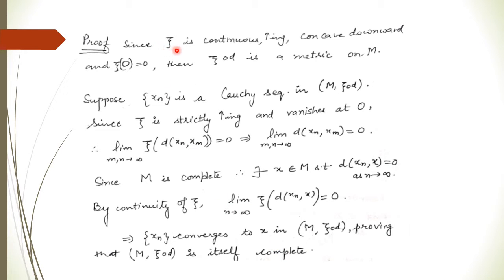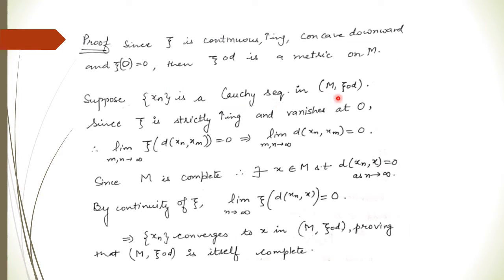Since ξ is continuous, increasing, concave downward, and vanishes at 0, the composition ξ∘d is a metric on m. We can easily verify that it satisfies all the conditions of a metric. We now consider any Cauchy sequence in m with respect to this composed metric ξ∘d.